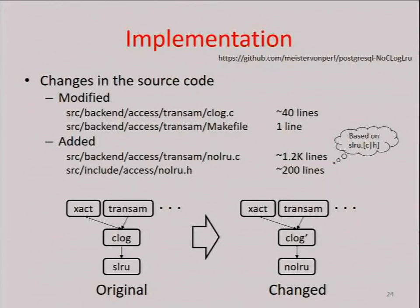I have built a prototype of C-Log direct mapping based on PostgreSQL 9.6. The major remodeling is the change from SLRU — simple LRU — to no-LRU. This module provides an API similar to SLRU. C-Log.c and makefile were modified to use no-LRU, and no-LRU.c and no-LRU.h were added to the source code tree. The source code of the prototype is published on GitHub, whose address is shown here.